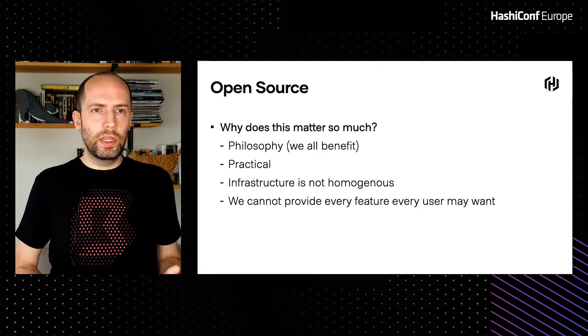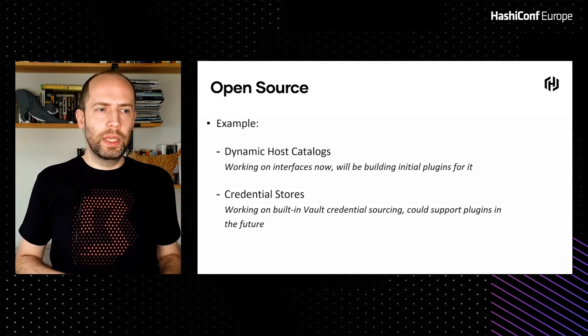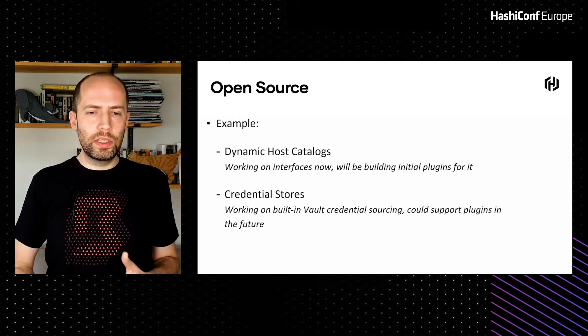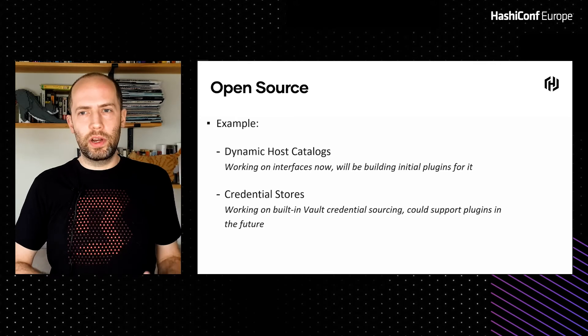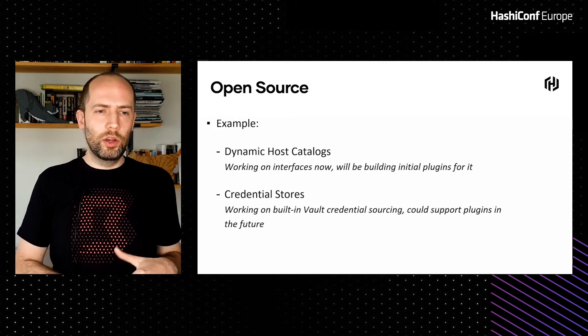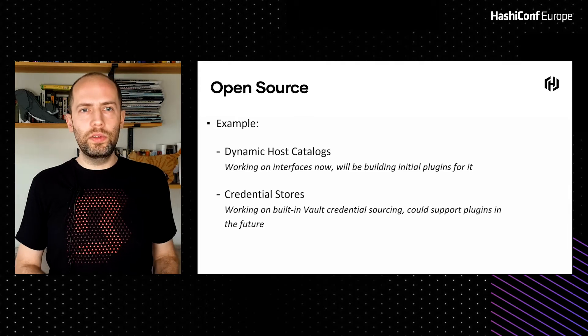It's also very practical — infrastructure is not homogenous, and we know that deeply at HashiCorp. As examples, we're building dynamic host catalogs which will pull in hosts directly from cloud providers, but there are tons of places that can host machines for you. We're working on the interfaces and will build initial plugins, but we know we can't provide every plugin for every user. Similarly for credential stores, we're working on built-in Vault credential sourcing right now but could support plugins in the future. Having open APIs and open source is very important because we want you to be able to build on what we put out there to support the things you need, because things are not homogenous.